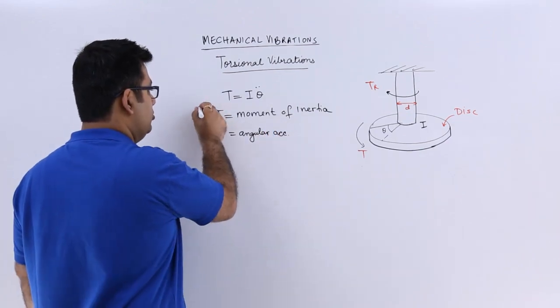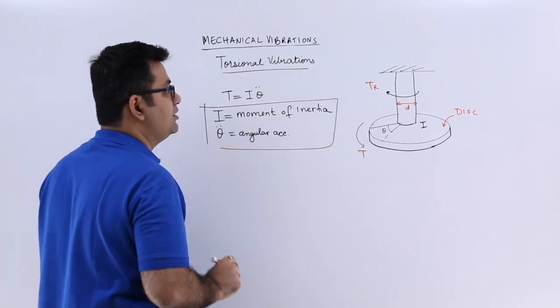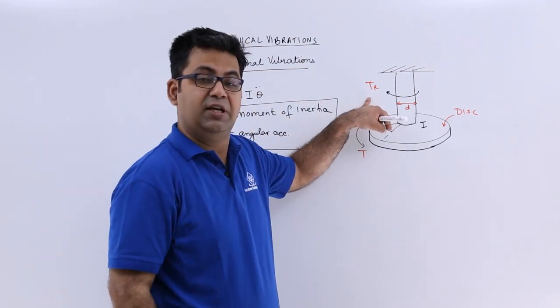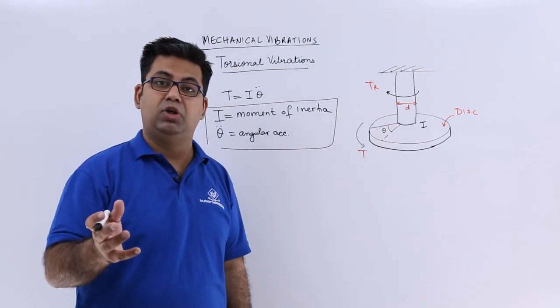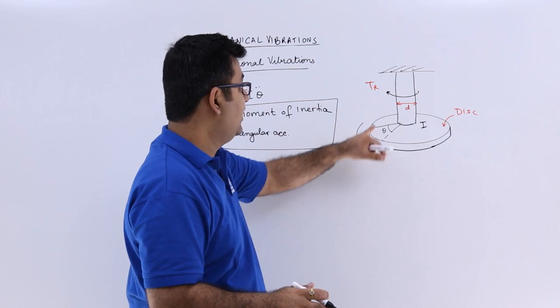So this would be resisted by this resisting torque. Now this resisting torque would be a function of the stiffness or the torsional stiffness of this shaft.